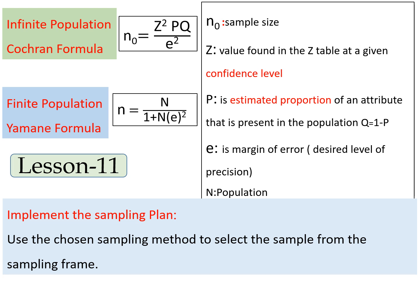Let's see the two most important formulas for determining sample size. The first is the Cochrane formula, used when we have an infinite or unknown population. For example, if we consider the viewers of a television program, we cannot know exactly how many people watch it — that is an infinite population. In the Cochrane formula: n = Z² × P × Q / E², where Z is the value from the Z-table at a given confidence level, P is the estimated proportion of an attribute in the population, Q = 1 − P, and E is the marginal error or desired level of precision.